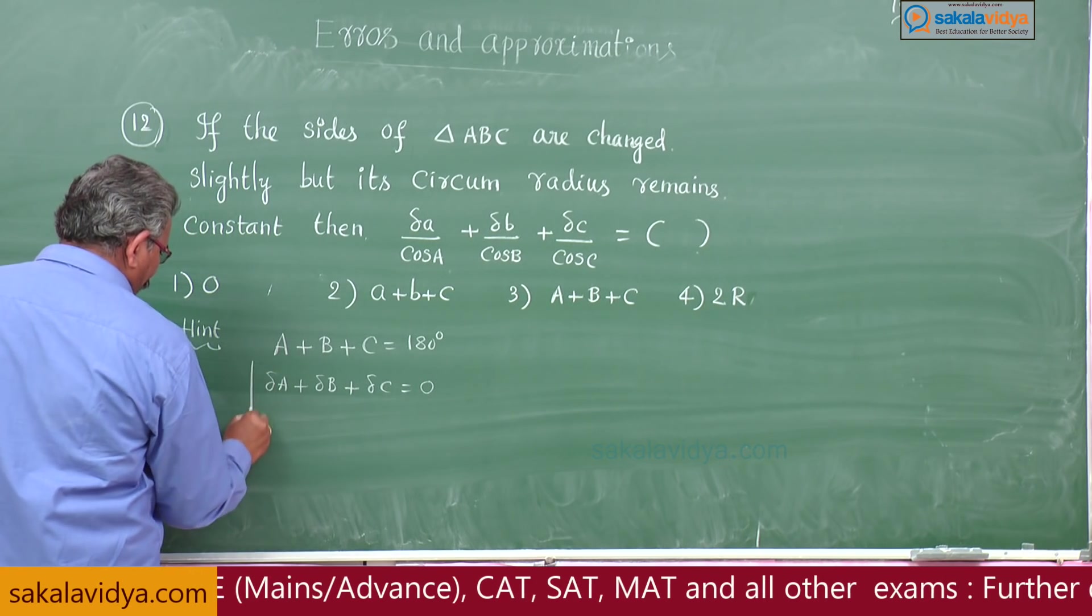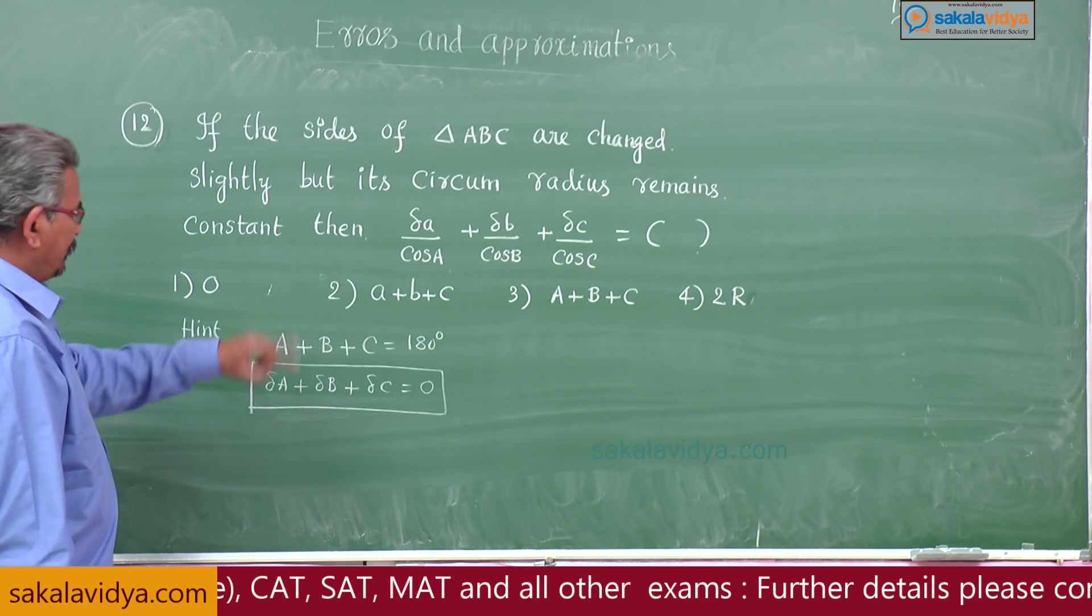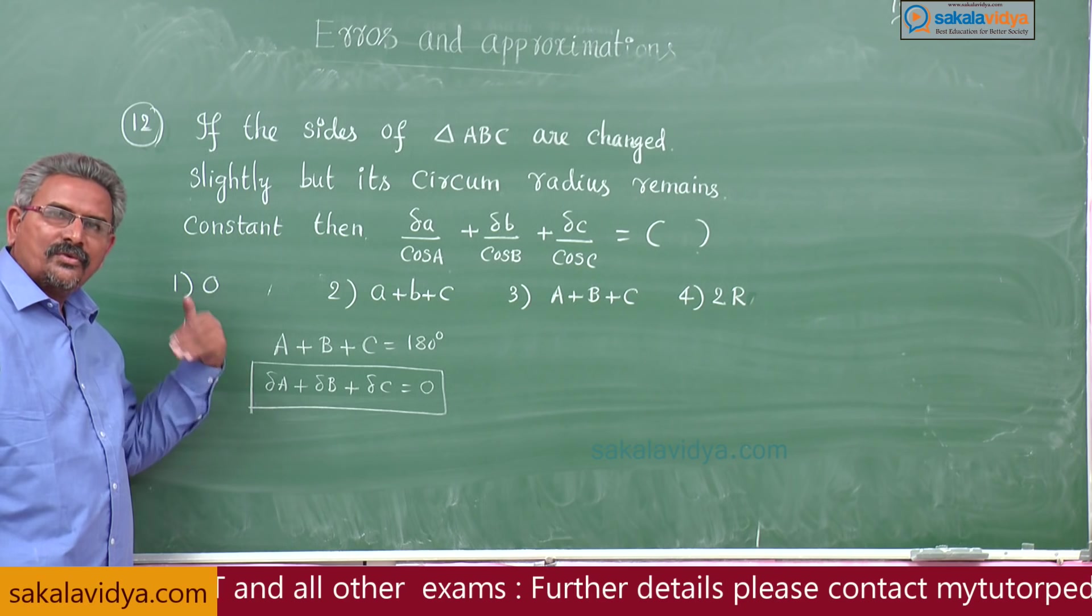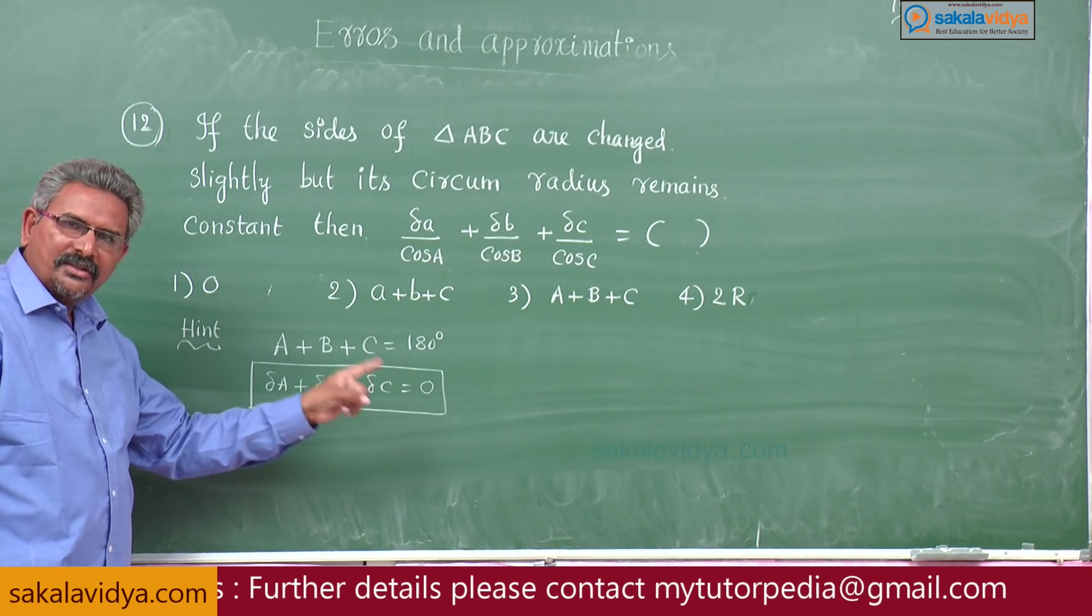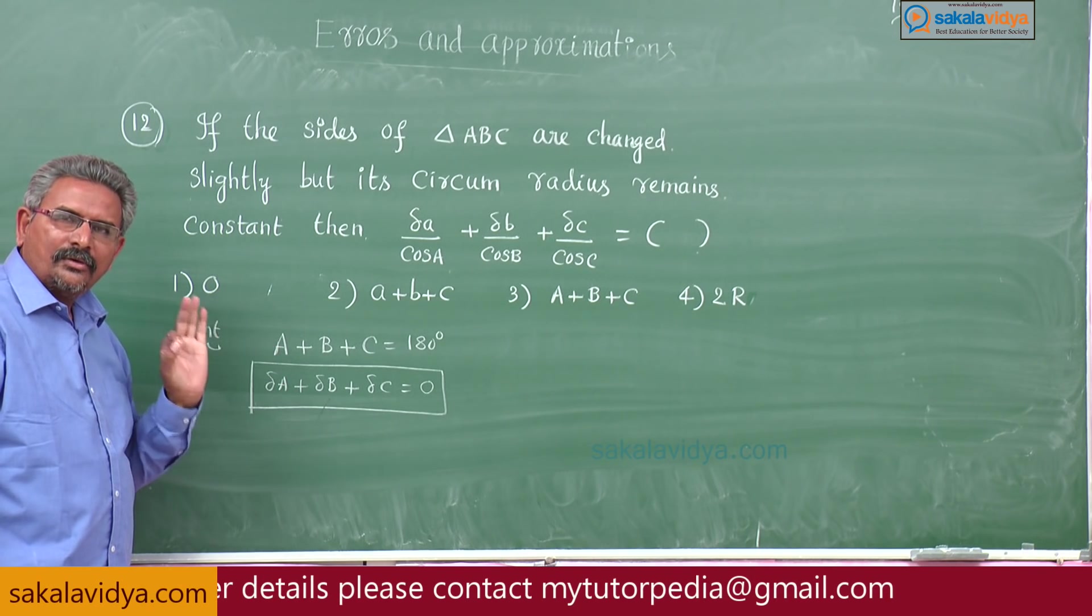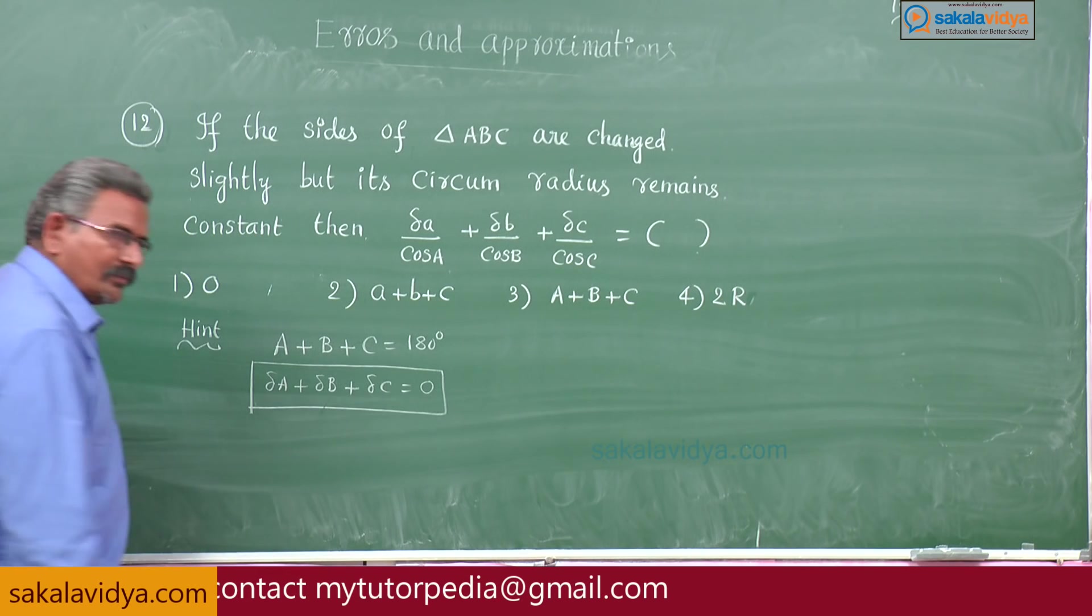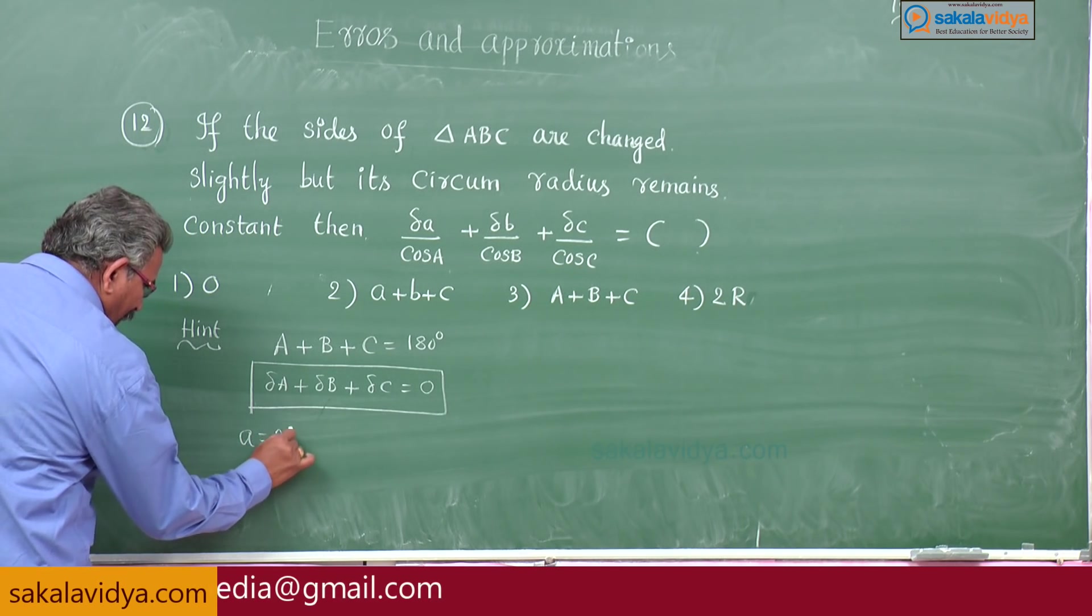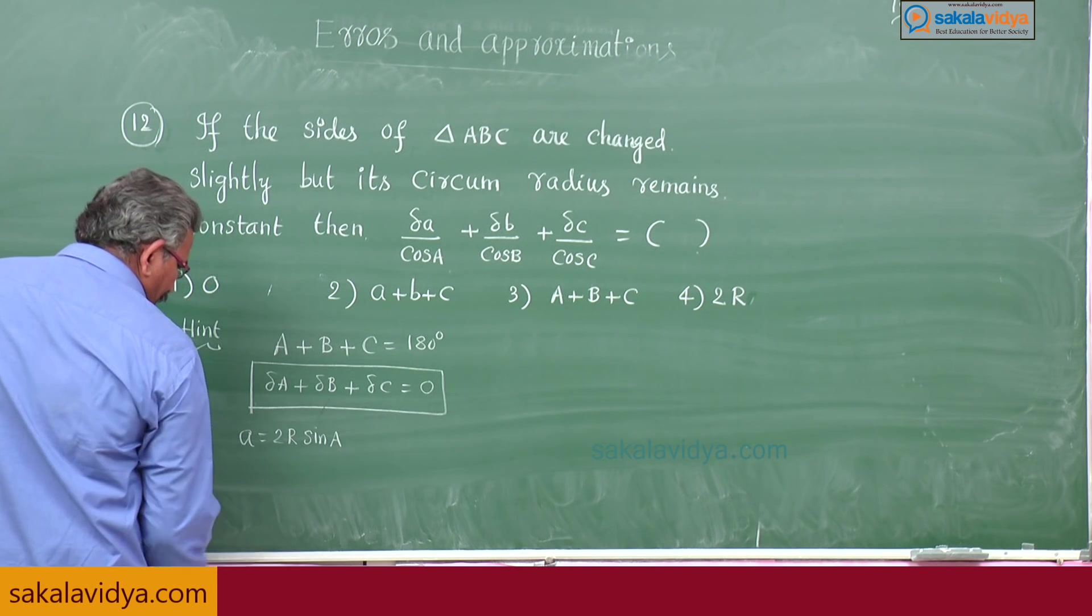If you write the differentials: delta A plus delta B plus delta C equals to constant, that means 0. You put a box because here side changing means the angles also will change, that is why delta A, delta B, delta C. Capital A, capital B, capital C stands for angles with the usual notation.